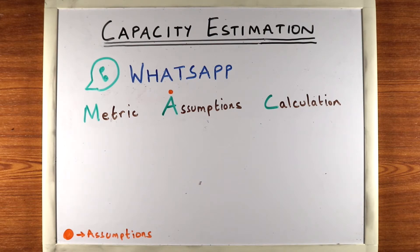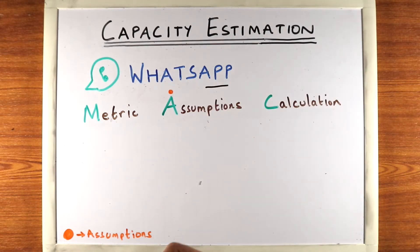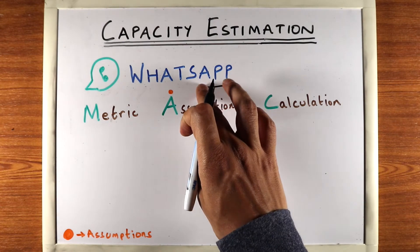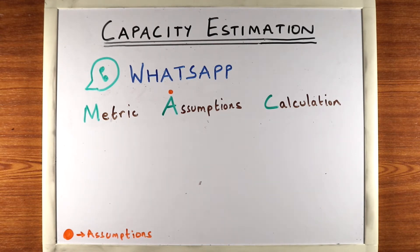All right, so let's now do capacity estimation for WhatsApp, or an app similar to WhatsApp. In a system design interview you'll be asked to design an app that is similar to WhatsApp, but that doesn't mean you're asked to design WhatsApp as it is today. What they're really asking is: if you were to design a messaging app, how would you do it?